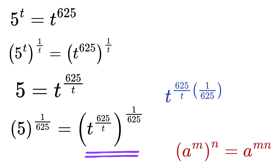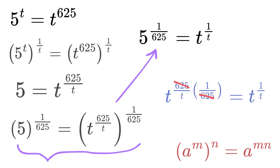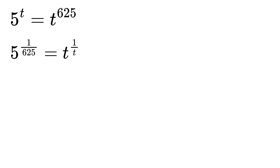The right side becomes t raised to 625 over t times 1 over 625, which simplifies to t raised to 1 over t. So we now have 5 raised to the power 1 over 625 equals t raised to the power 1 over t.